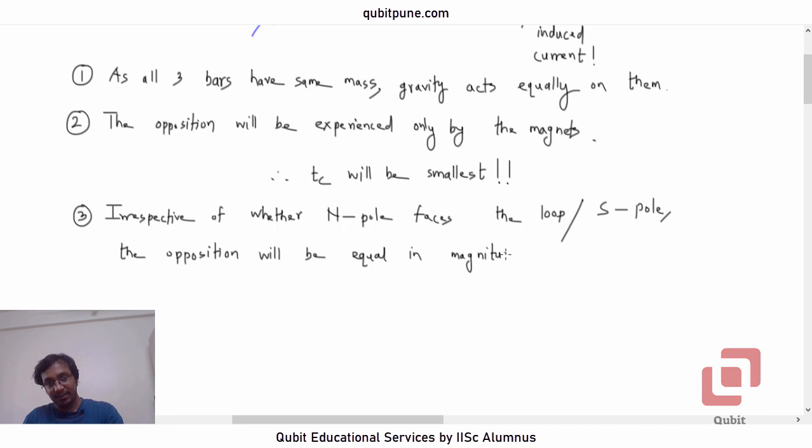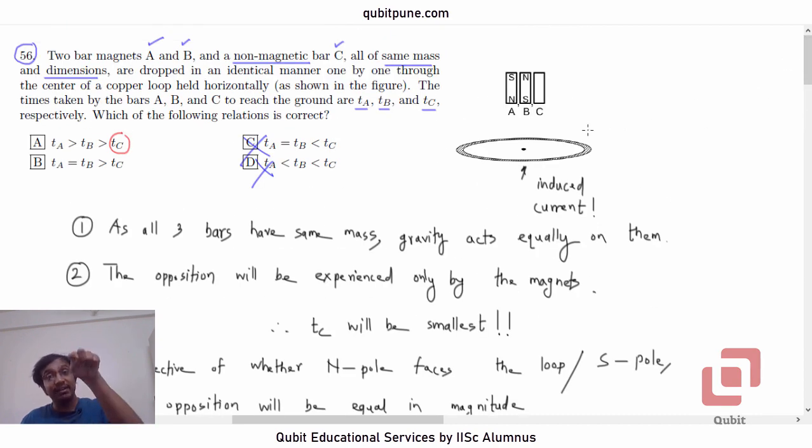We are not interested for this particular problem in determining the direction of the induced current in the loop, whether it is anticlockwise or clockwise. That will be different for magnets A and B, because the different poles are approaching. But as far as the time taken by these magnets A and B to reach the ground or to reach this plane is concerned, those times will be same.